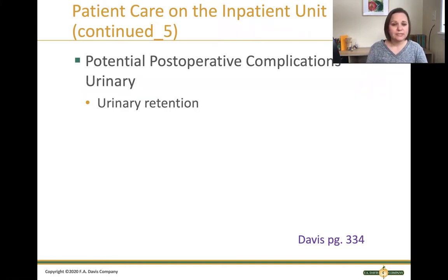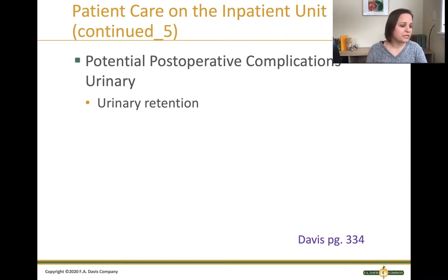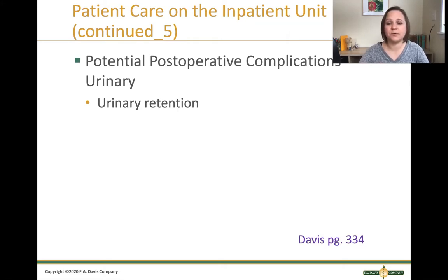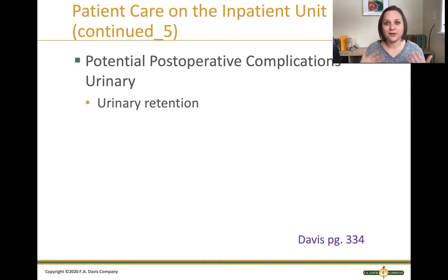Another problem patients can have is with their urinary system, specifically urinary retention — being unable to void. This happens because anesthesia depresses the nervous system and affects its control of voiding, there is decreased sensation of a full bladder, and opioids combined with immobility after surgery can all lead to urinary retention. Post-op nurses want to see the patient void before going home. If a certain amount of time passes without voiding, nurses may straight cath them or insert a temporary Foley catheter until the bladder wakes up.